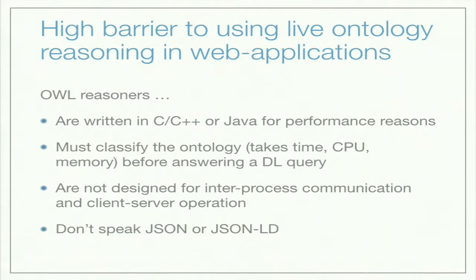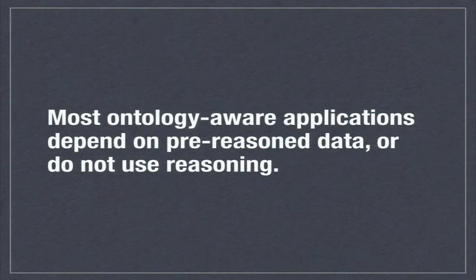Despite these tremendous capabilities that an OWL reasoner can convey to an application, there's a really high barrier to deploying one, and that's in the nature of how these tools work and how they're built. Most prominently, they're essentially written in a low-level language and not designed for communicating with other languages, so you have to build them into your application directly. That's just not feasible for many web applications. As a consequence, most ontology-aware applications depend on data that's pre-reasoned and hence require a lot of storage.